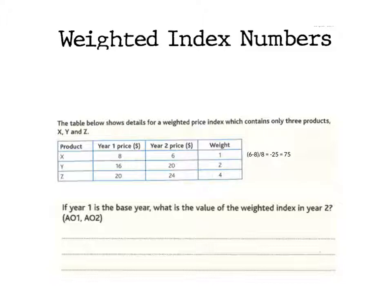The first one I would do: my new year price, so my year two price minus my original year price. Six minus eight - as we can see the price has fallen from year one to year two. Remember we're treating year one as the base rate, so we're treating year one as the hundred.